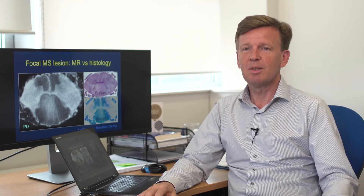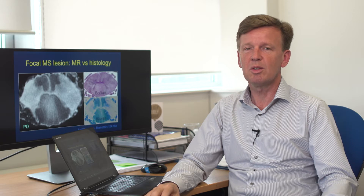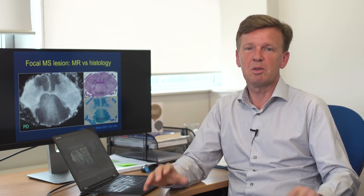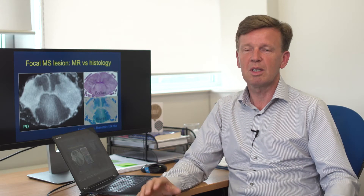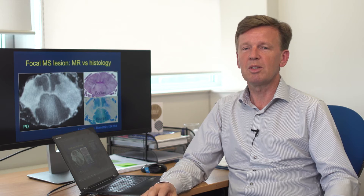In multiple sclerosis, which is a white matter disease, we typically see little spots in the brain that help us diagnose the disease, but also to determine who should be treated and what is the risk for disability.